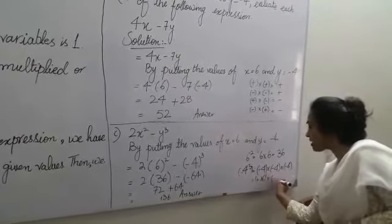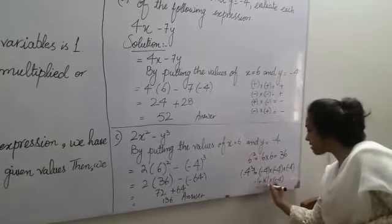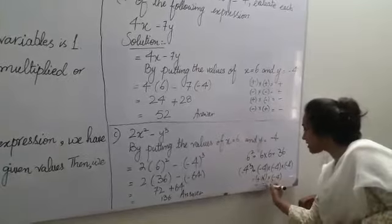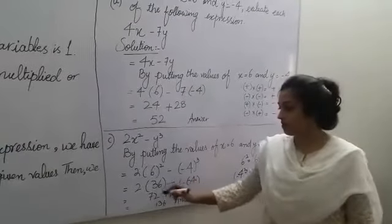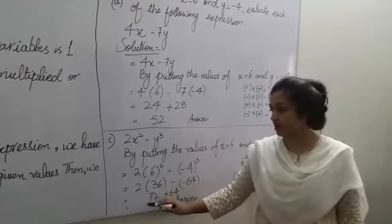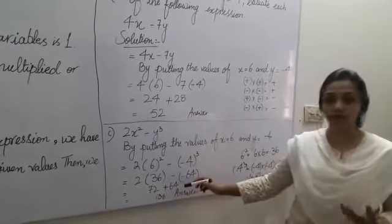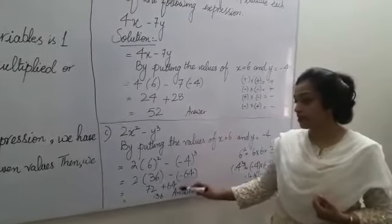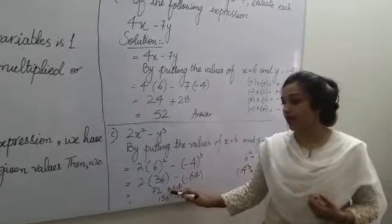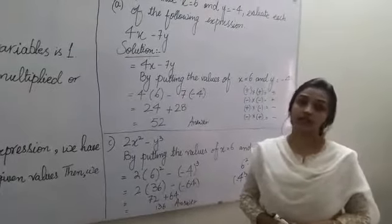And if we multiply plus 16 by minus 4 then we get minus 64. Now we have to multiply 36 by 2 then we get 72 and minus into minus we get the positive answer. So we have to write the 64 over here. And if we add these two numbers then we get 136 as the answer.